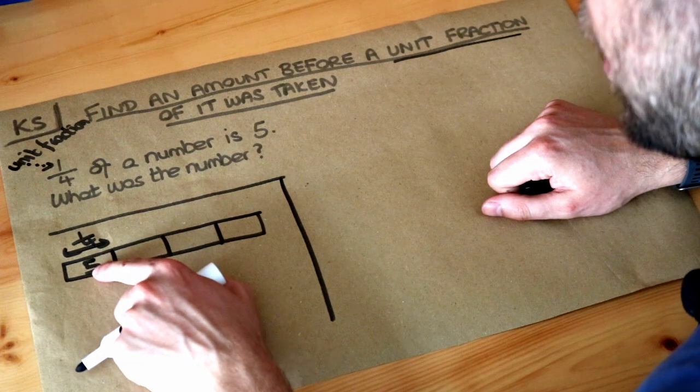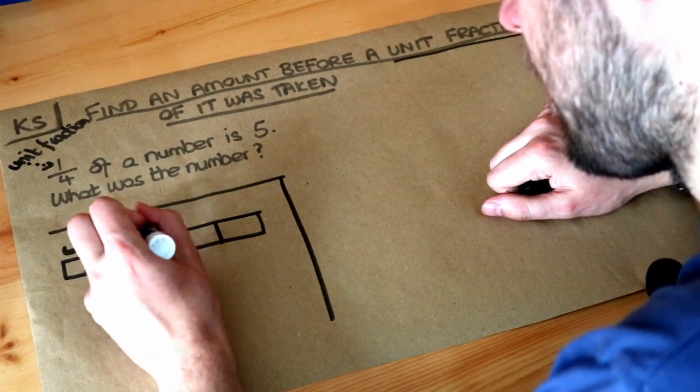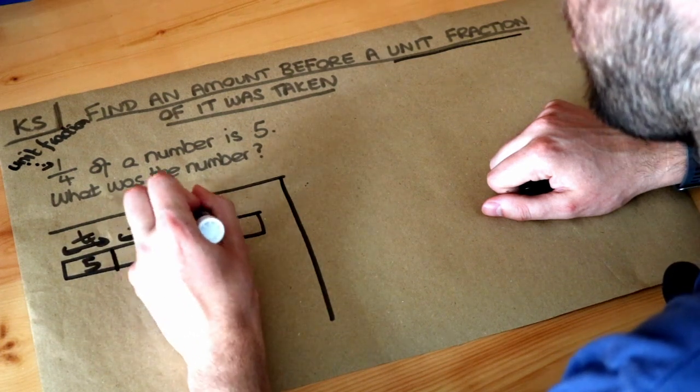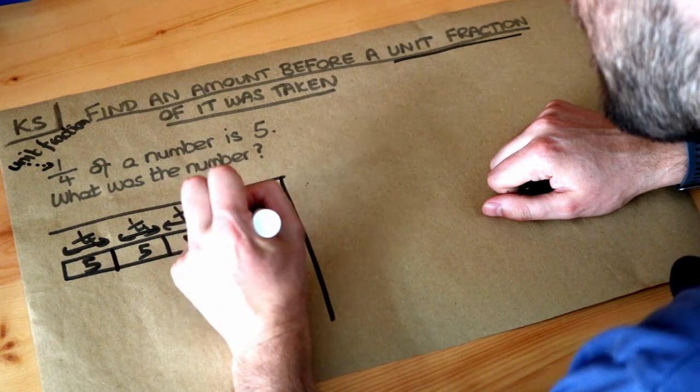So if a quarter of the number is 5, then this next quarter of the number is also going to be 5. The next quarter of the number is also going to be 5, and we've got a quarter here of the number that's also 5.